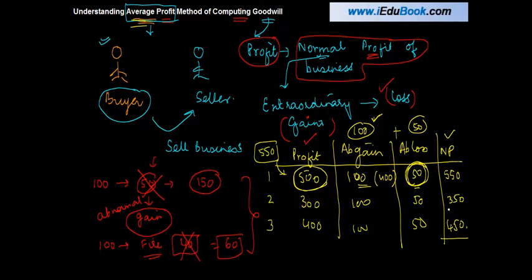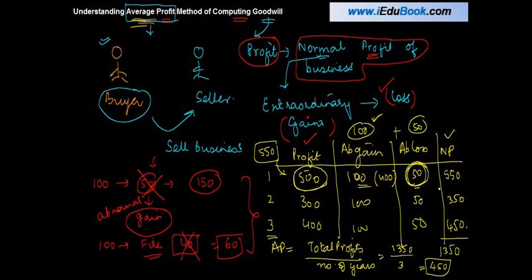And then if you have to calculate the average profits, what do you do? You will add on the profits for whatever numbers are there. So three years is what we have taken. 550 plus 450 plus 350, 1350. And average profits is what? Total profits earned by me during this period divided by number of years. Or 1350 divided by three, which is 450. So my average profits is going to be 450.